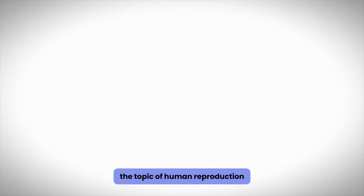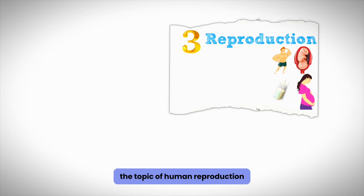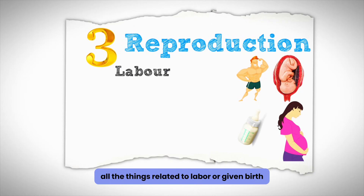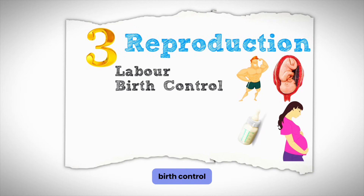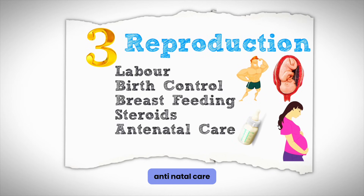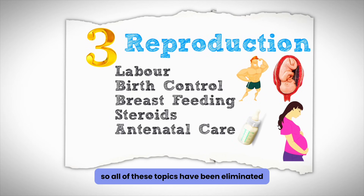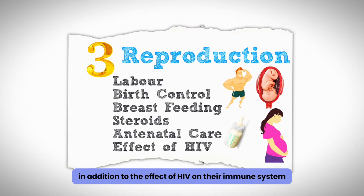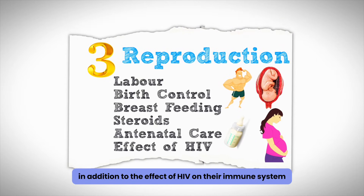Regarding the topic of human reproduction, you should eliminate all things related to labor or giving birth, birth control, breastfeeding and steroids, and antenatal care. All of these topics have been eliminated, in addition to the effect of HIV on the immune system.